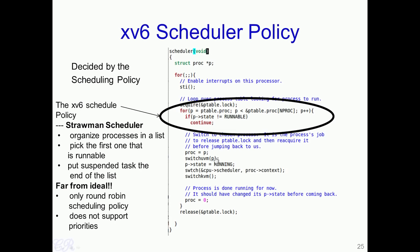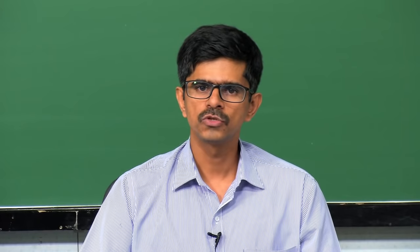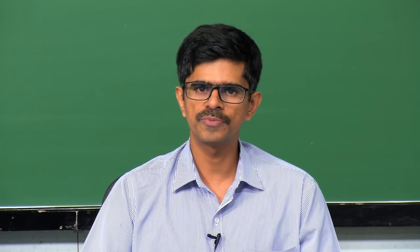The XV6 scheduling policy is a variant of Round Robin. The XV6 scheduler passes through the ptable array — an array of process control blocks (procs) — finds the next process that is runnable, and invokes the context switch. Every time the scheduler executes, the next runnable process in the array gets scheduled. Next, we will look at priority-based scheduling algorithms.